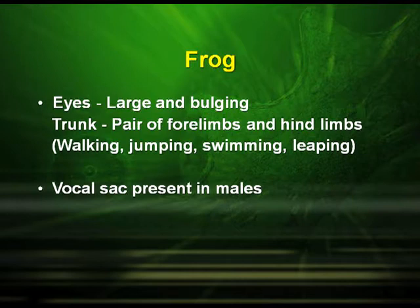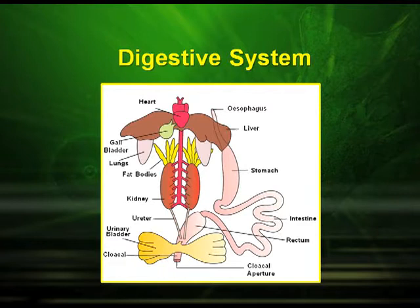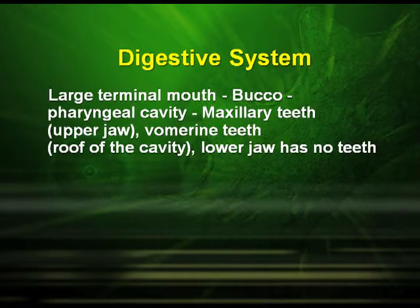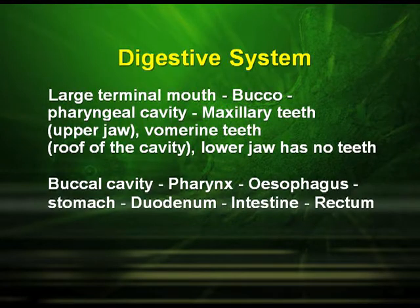The vocal sacs are present in males. Regarding the anatomy — the digestive system of frog — they have a large terminal mouth leading to the buccopharyngeal cavity, which has maxillary teeth in the upper jaw. The vomerine teeth are at the roof of the cavity, while the lower jaw has no teeth. The buccal cavity leads to the pharynx, then the oesophagus, stomach, duodenum, intestine and sacrum.